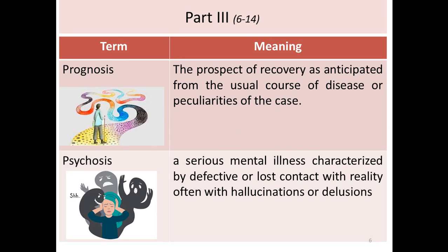Prognosis is the prospect of recovery as anticipated from the usual course of disease. According to the progression of the disease, it may end with recovery, become a chronic state, or end with death. We call this the prognosis — either a good prognosis as in recovery, or a poor prognosis as in becoming a chronic state or ending with death.